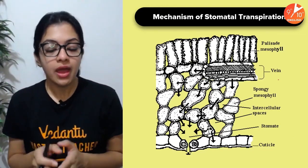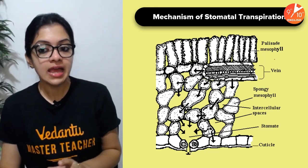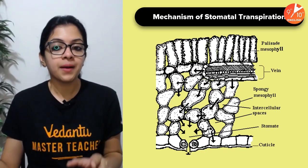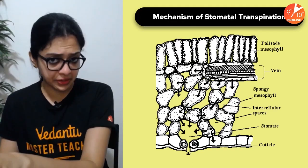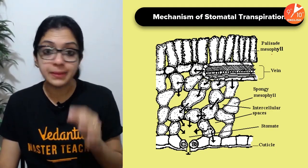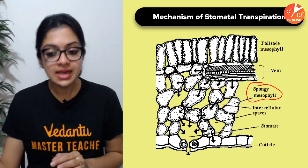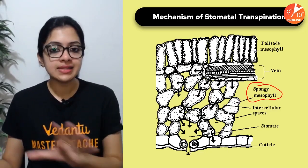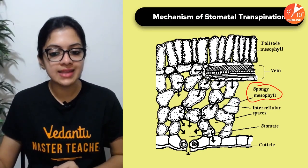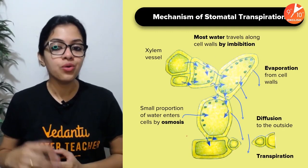Coming to the mechanism of stomatal transpiration — you need to understand the cross-section of a leaf: there's a cuticle, the upper and lower epidermis, and just below the epidermis is the mesophyll layer — palisade mesophyll and spongy mesophyll — with plenty of air spaces. The stomata are found in the epidermis, between the epidermal cells, guarded by guard cells.